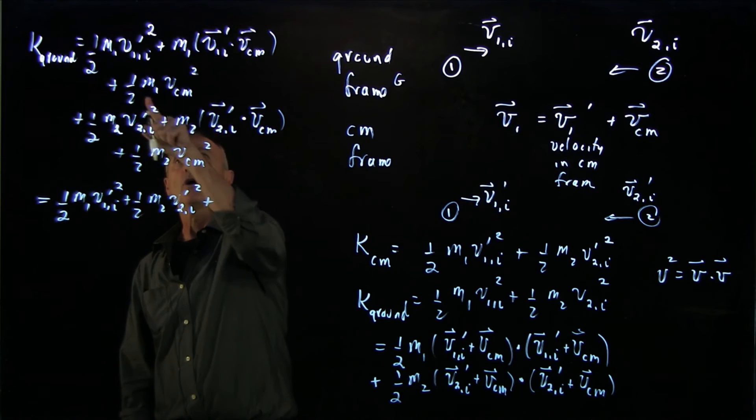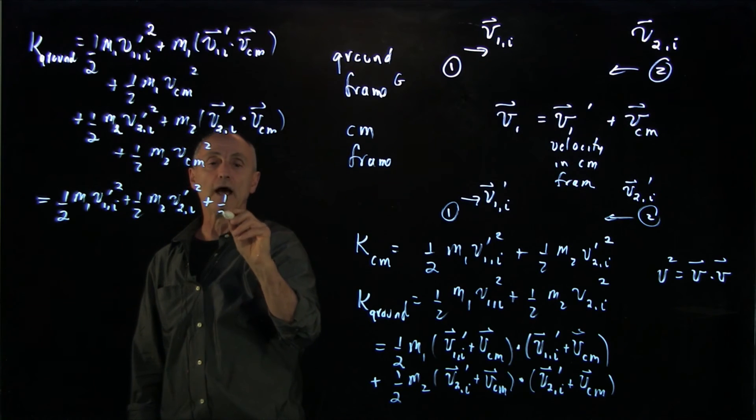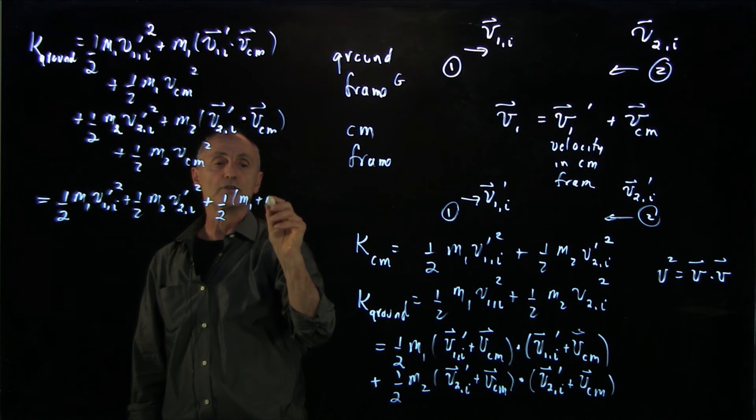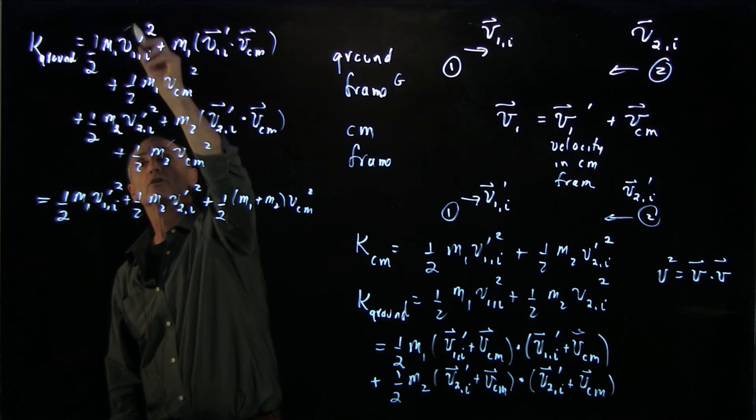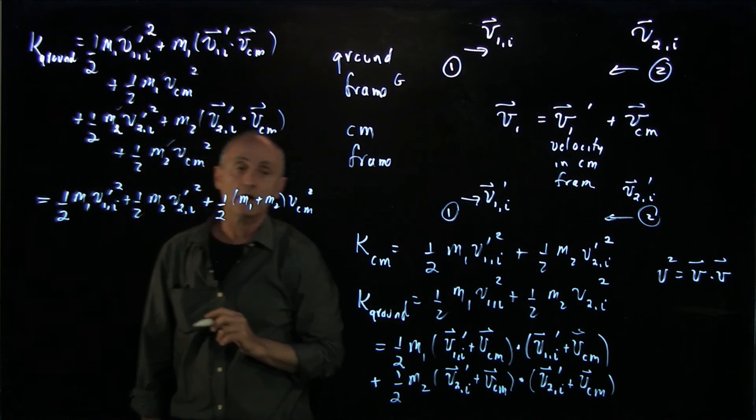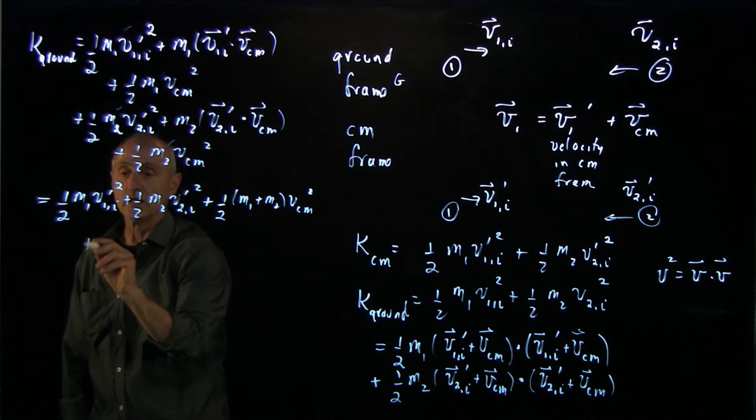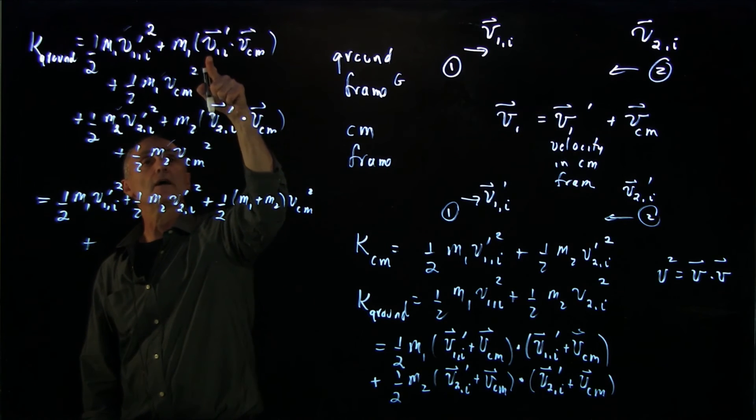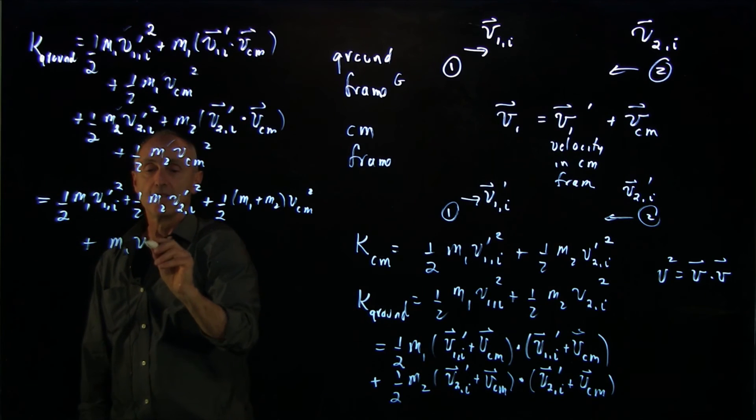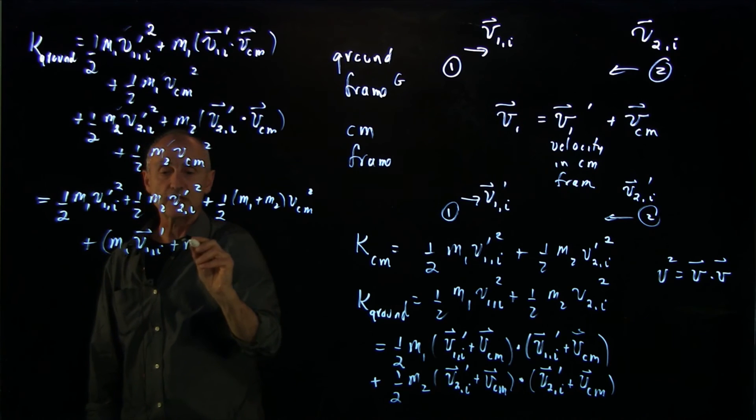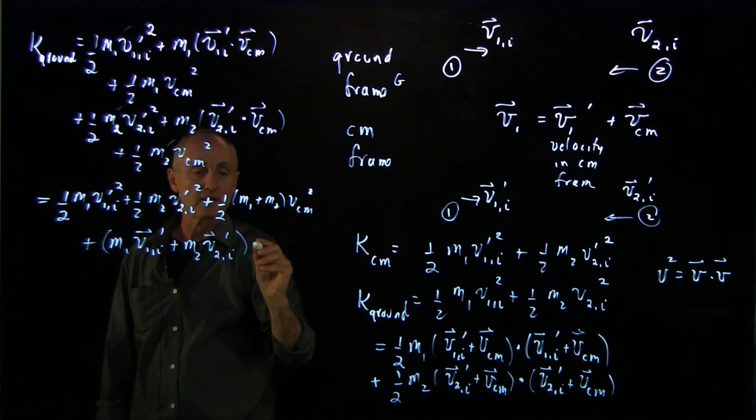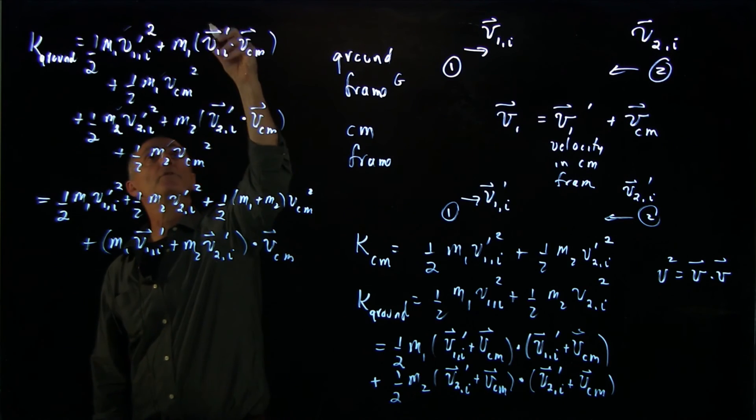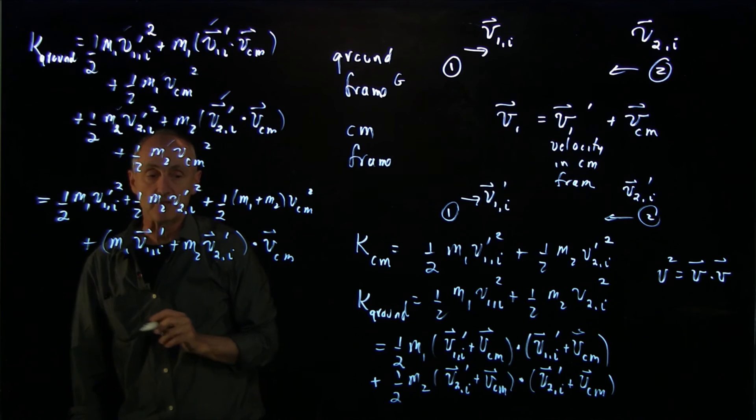We have the total mass, 1 half m1 plus m2 vcm squared. I can just put a little check to show which terms I've done so far. And now here's the interesting one. We have m1 v1i prime plus m2 v2i prime dot vcm. That represents this term and this term added together.